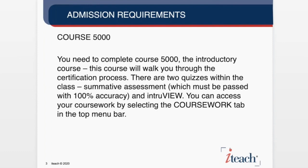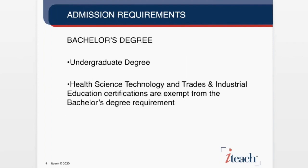Course 5000 is an introductory course that walks you through the certification process, and the two quizzes are part of the admission requirements. You can work on Course 5000 immediately — once that application is in place, you have access to that course. I recommend individuals work on Course 5000 while they have requested their transcripts to be submitted, so that both are done simultaneously.